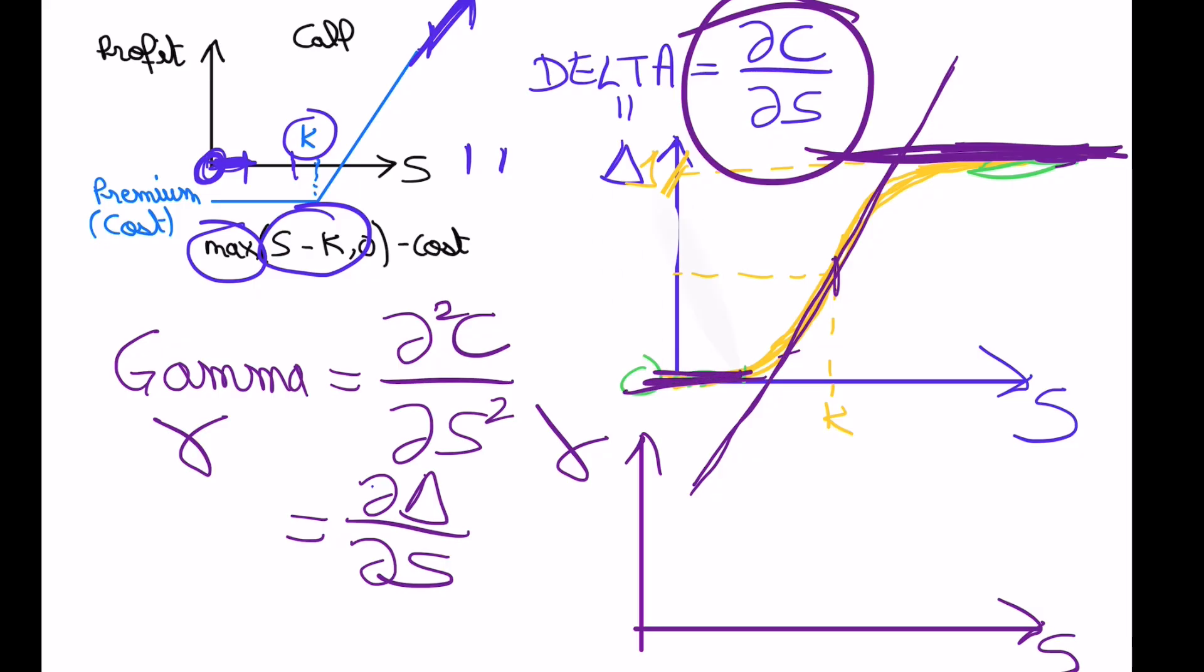So what it means is that when you're here, your gamma is zero. When you're here, your gamma is zero. And here it starts getting higher and higher. Here is the max.